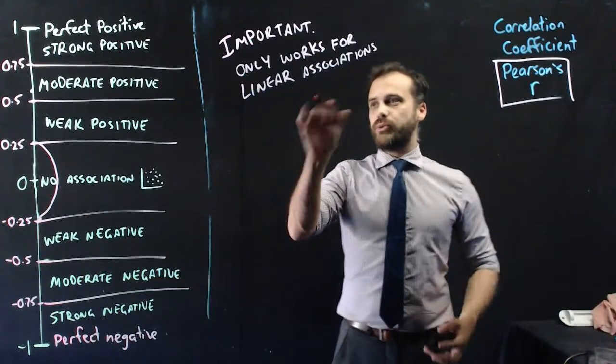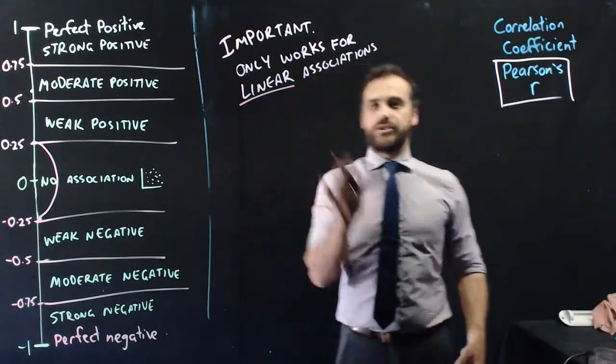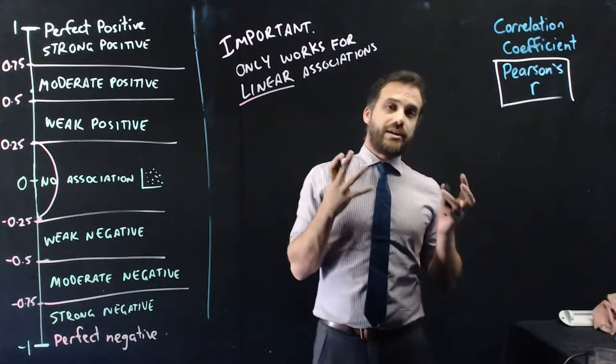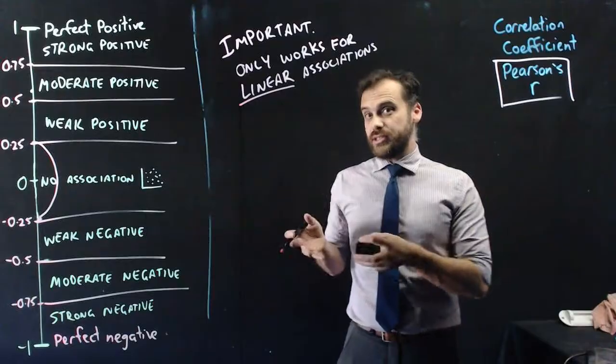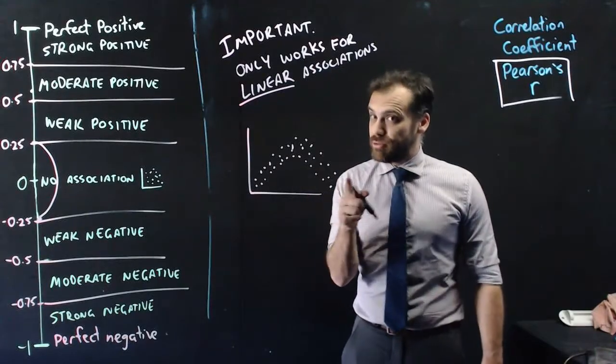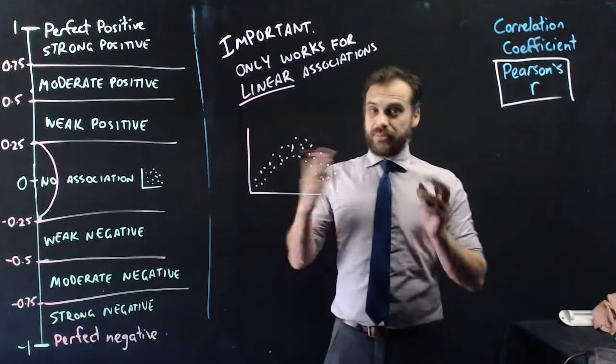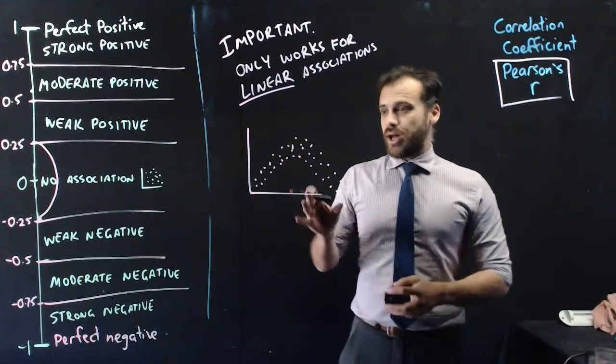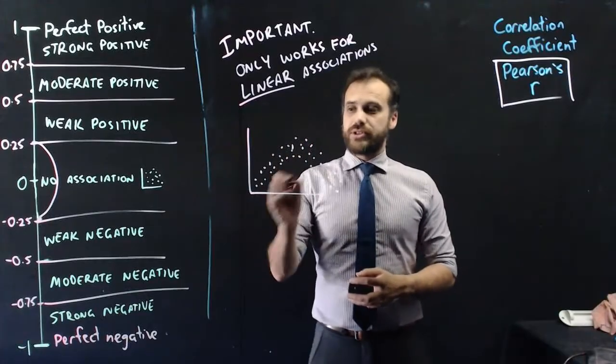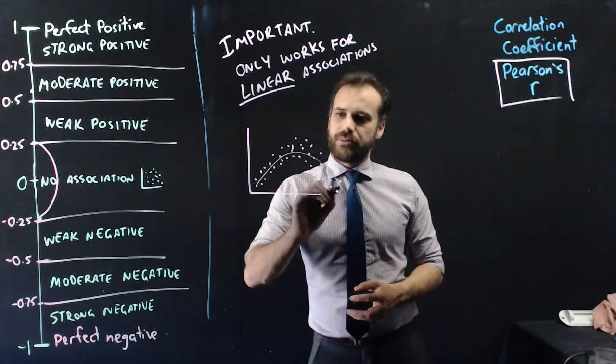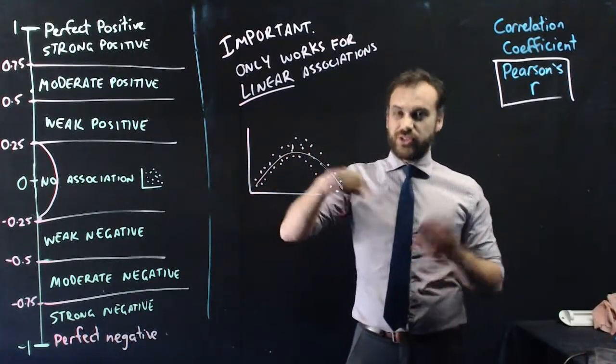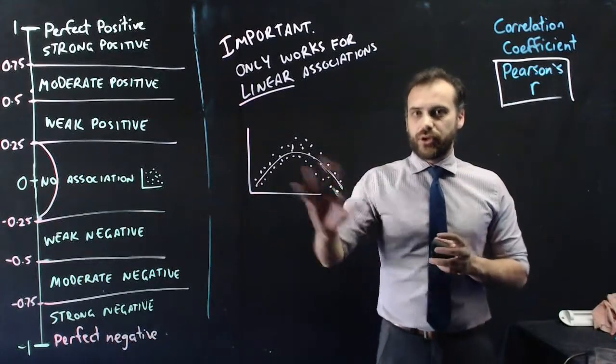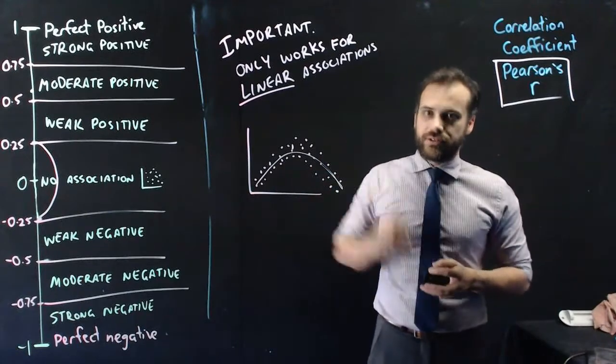Super important, it only works for linear associations, linear like a line. So if you tried to calculate the r of something that looked like this, well, the r value for that would probably be 0, or it might be something else, but it would be meaningless, and you just wouldn't want to do it, because it only works for linear associations. And you can see this looks more like it's a bendy one, right? It's non-linear. Not much more to say there, just r is meaningless if you're dealing with non-linear. It only works for linear associations.